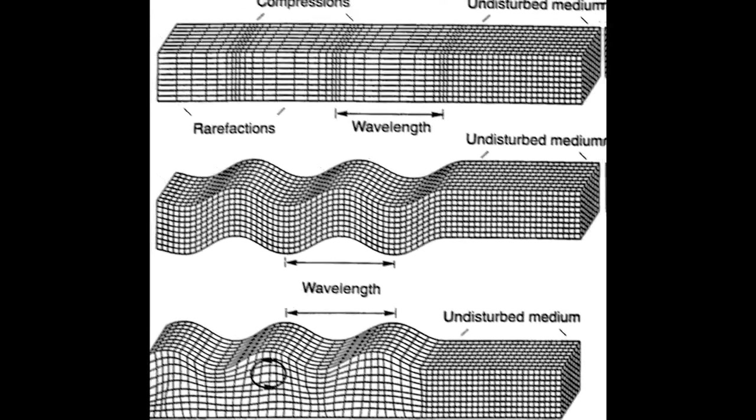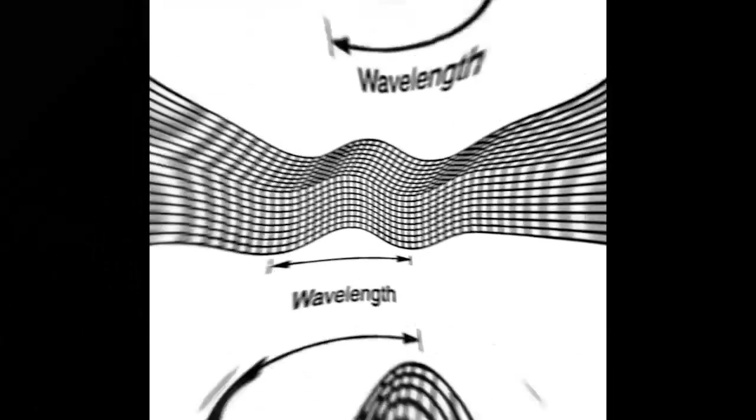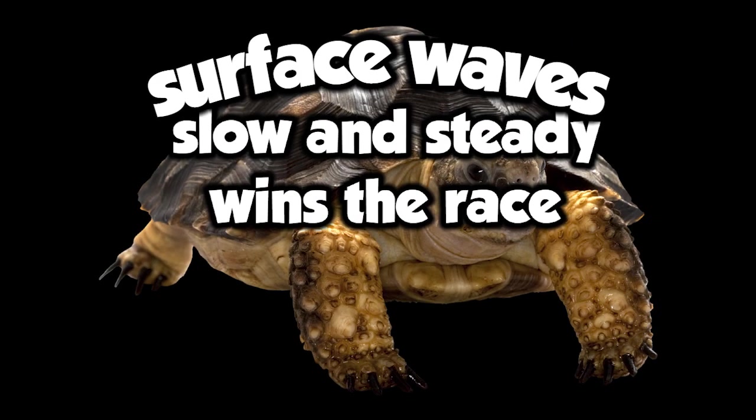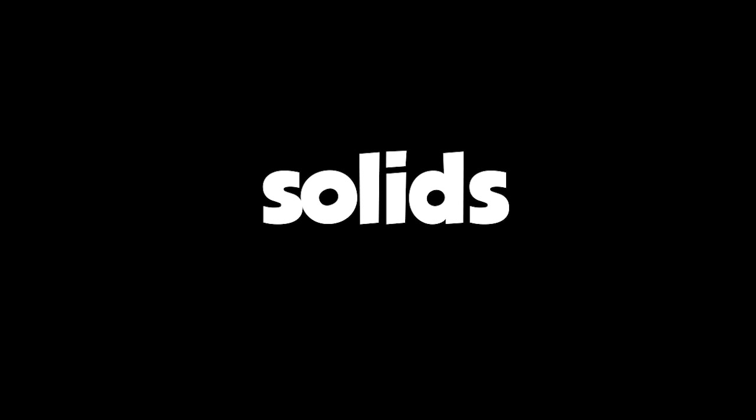Now there are three types of seismic waves: P waves, S waves, and surface waves. P waves travel through liquids, gases, and solids. Although they slow down big time through liquid, they can still travel through it.